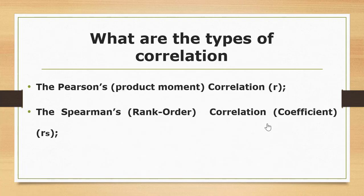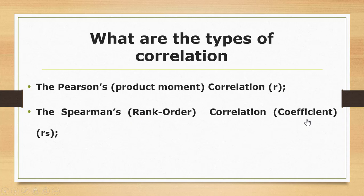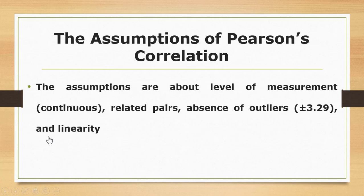The two main types of correlation are Pearson's product-moment correlation, referred to as r, and Spearman's rank-order correlation coefficient, referred to with a subscript s. Let's now look at the assumptions of Pearson's product-moment correlation.